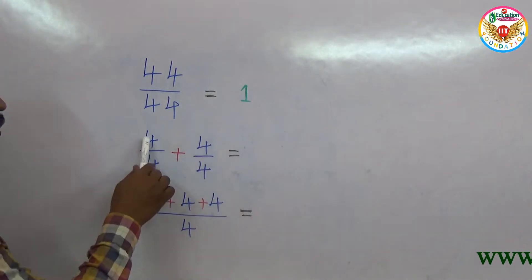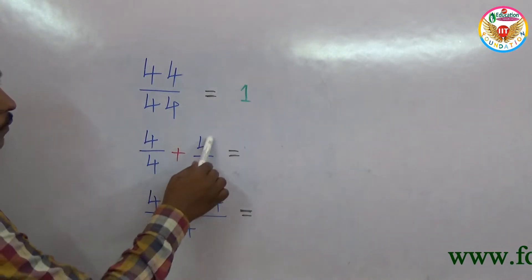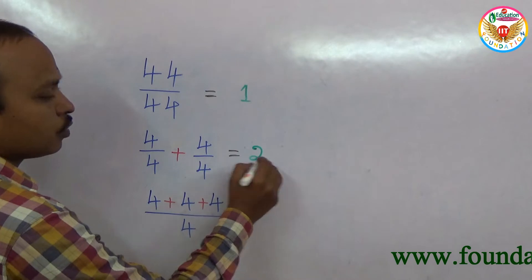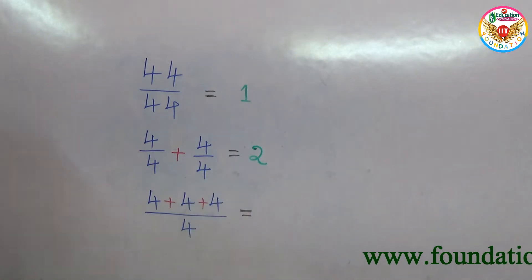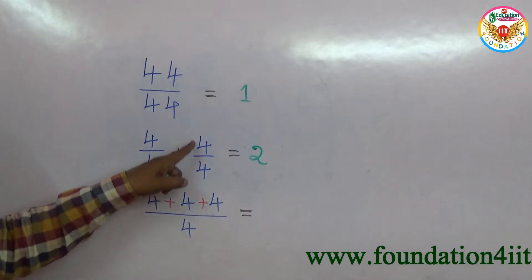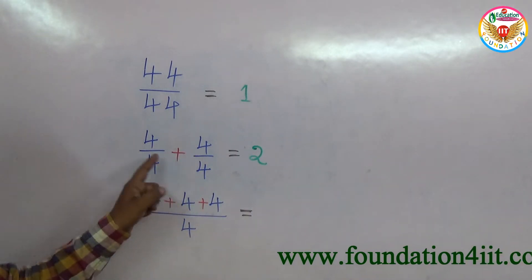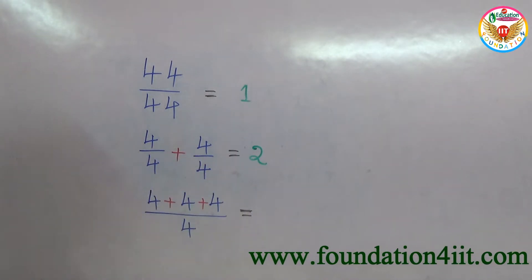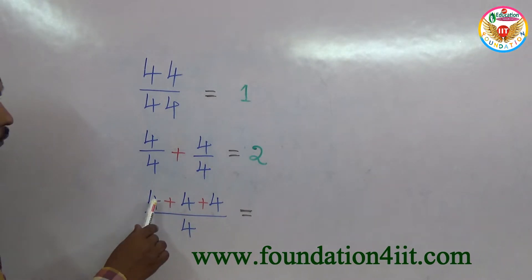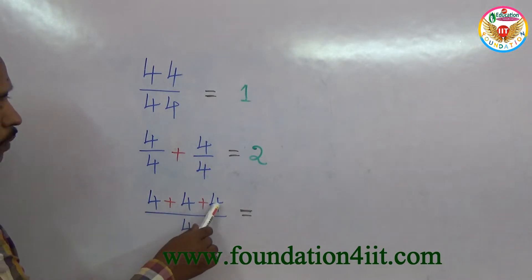To get two: 4/4 + 4/4. Here, 4 divided by 4 is 1, plus 4 divided by 4 is 1, so 1 plus 1 equals 2.